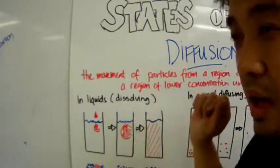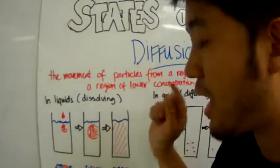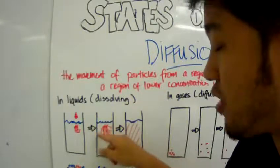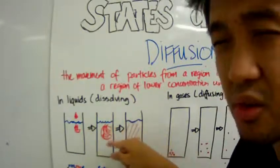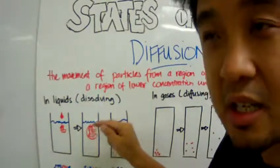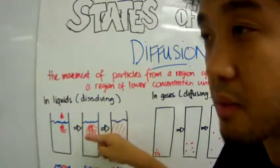Then as you allow time to pass, what you begin to see is that the red colored dye begins to spread throughout the beaker, and the intensity of the color can even get lighter.